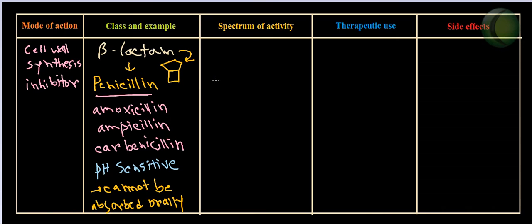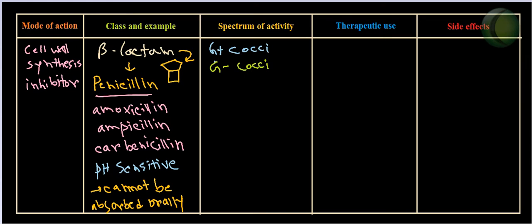Now let's talk about the spectrum of activity. Penicillin is a broad-spectrum antibiotic, covering a very broad range of microorganisms. It is especially effective against gram-positive cocci such as staphylococci and streptococci, and gram-negative cocci such as meningococci and gonococci — meaning Neisseria gonorrhoeae and Neisseria meningitidis. It can also act against gram-positive bacilli (rods), including Bacillus perfringens and Clostridium species, and against diphtheria.